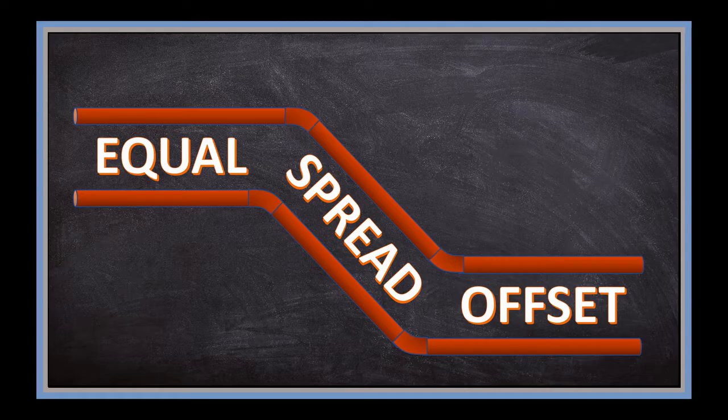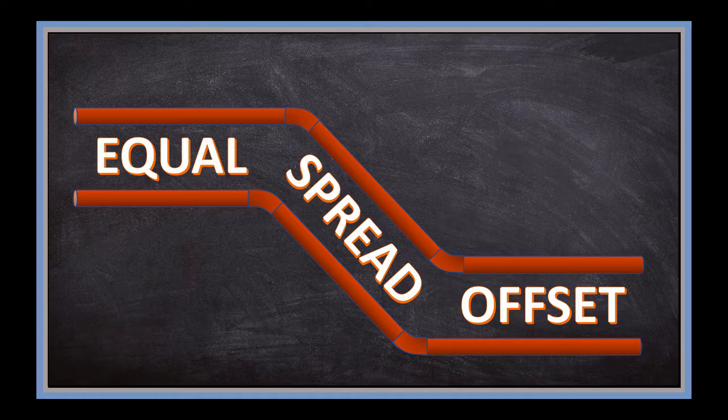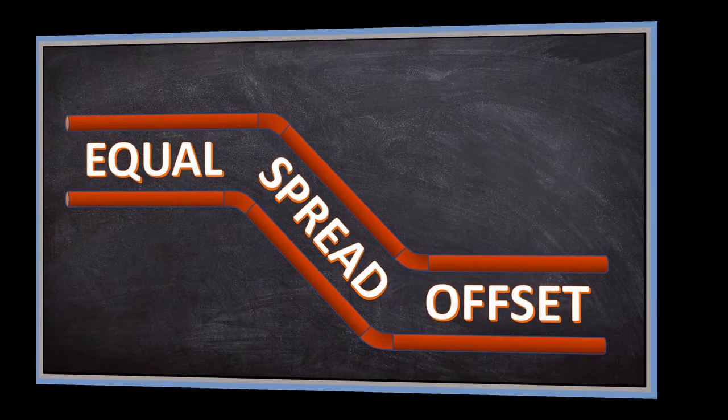As you can see there, the two pieces of pipe have the same spread throughout the entire runner, throughout the entire offset. So let's get going.